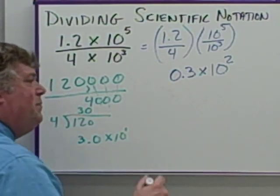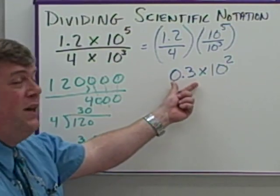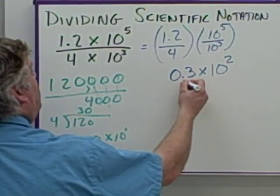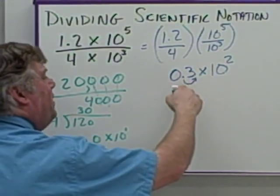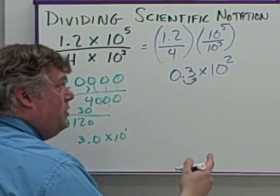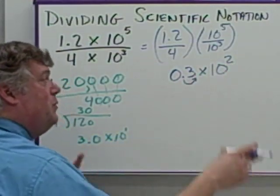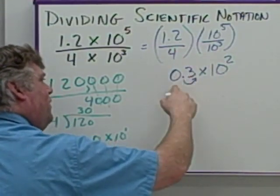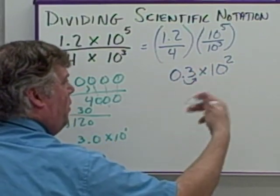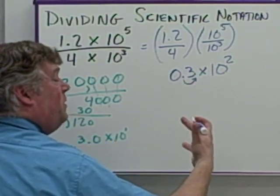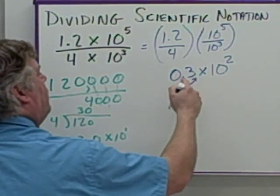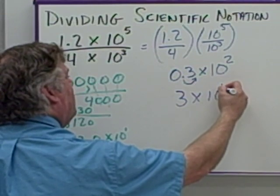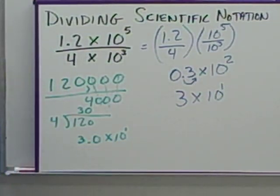It doesn't look like it matches. But again, this number needs to be greater than or equal to 1, but less than 10. This is not greater than 1. It's less than 1, which means I have to move the decimal in one place value this way, which is making it one place value larger, which means the exponent needs to get one place value smaller. So this becomes 3 times 10 to the 2 minus 1, which is 1. Same answer as the long way of doing it.